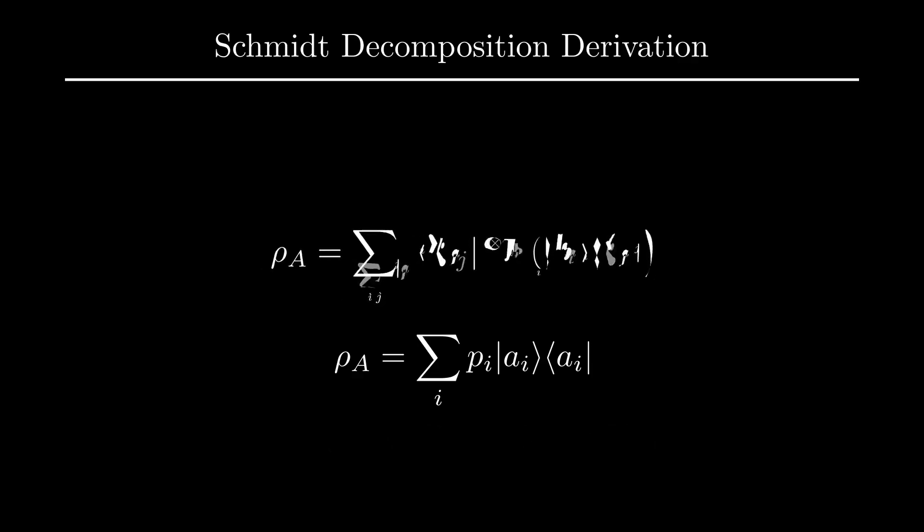Using cyclicity of trace, we get the following expression for rho A. Here, the inner product of tilde BJ and tilde BI corresponds to the matrix element of the ith row and jth column of the density matrix defined in our basis AI. However, since the density matrix is diagonal in this basis, we must have that this inner product equals the eigenvalues along the diagonal when tilde BI and tilde BJ are the same, in other words, when I and J are the same, and zero otherwise, which we can write using this Kronecker delta expression.